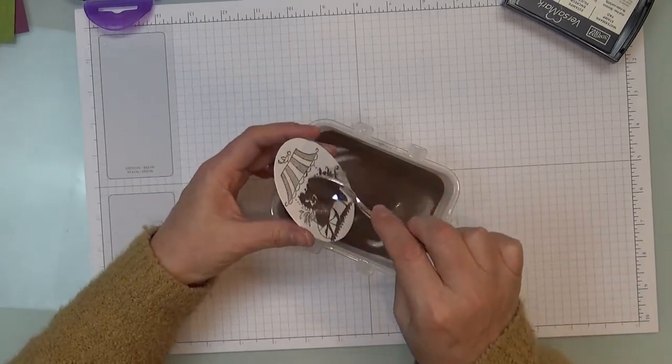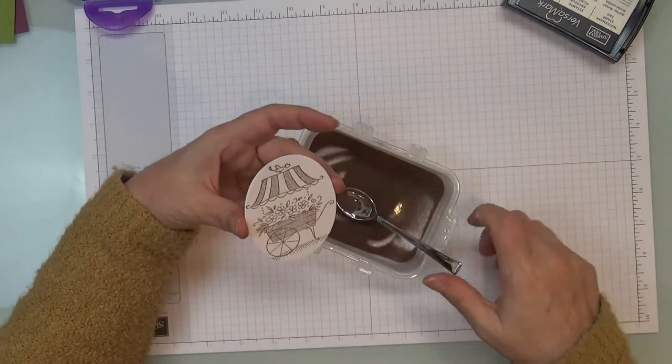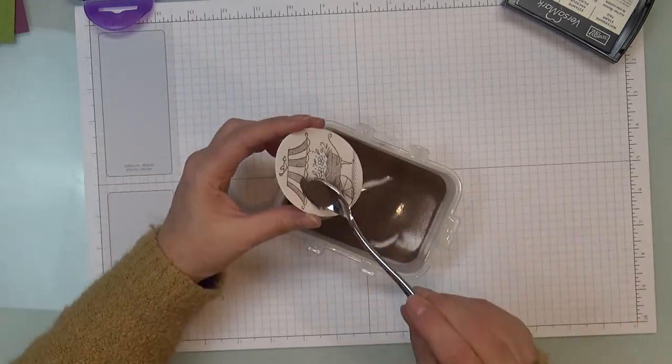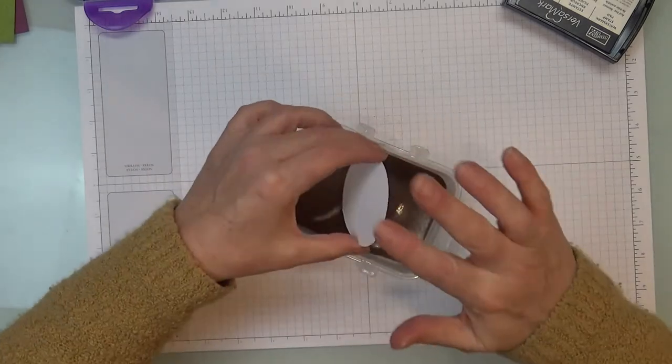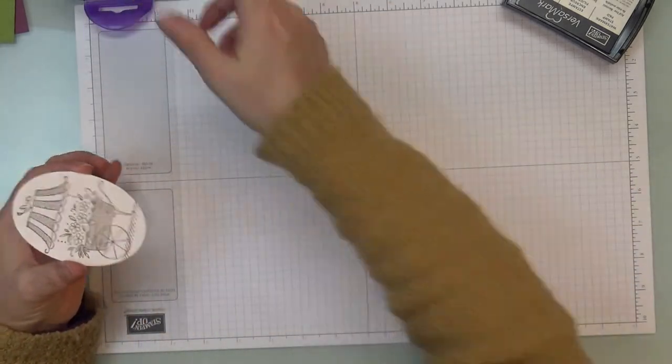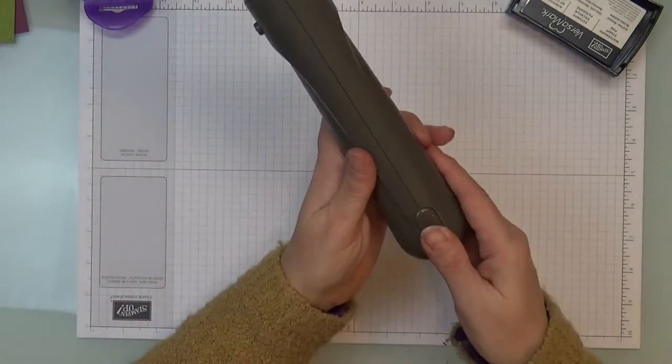So I'm just trying to make sure because this is such a tiny area that I am embossing. I'm just trying to make sure that where my fingers touch the edges that I'm not getting any of that off there. So I'm just going to lay that down, turn on the heat tool.